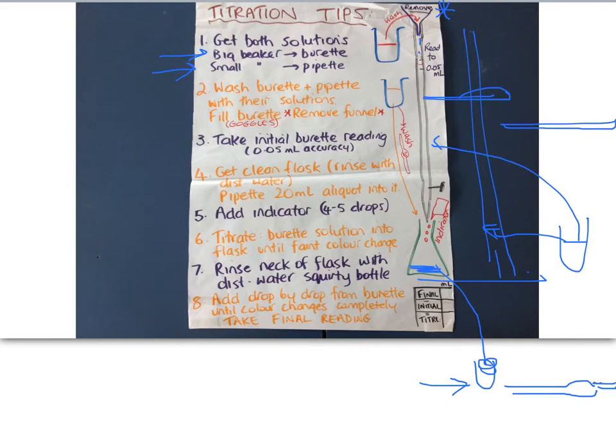You take your initial burette reading, remembering to go from the bottom of the meniscus. You don't have to start at zero. It just wastes time if you're always trying to take it up to zero each time. Whatever it is to start with, that's what you want to record for your initial reading in a table that looks like this. Putting your initial reading there.